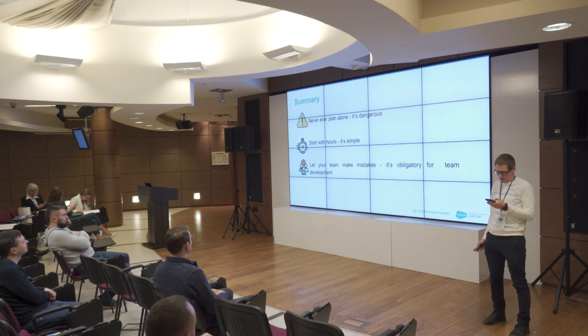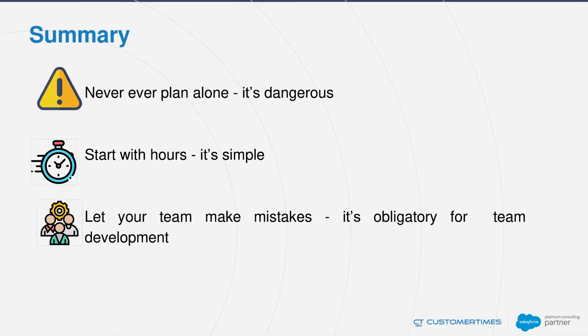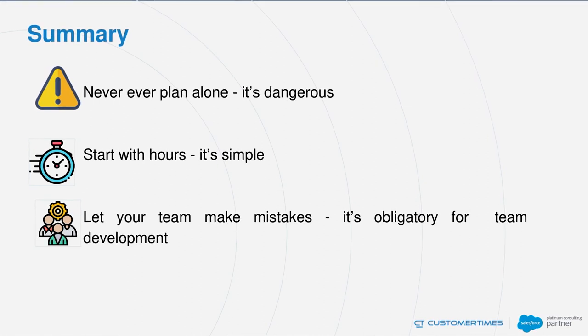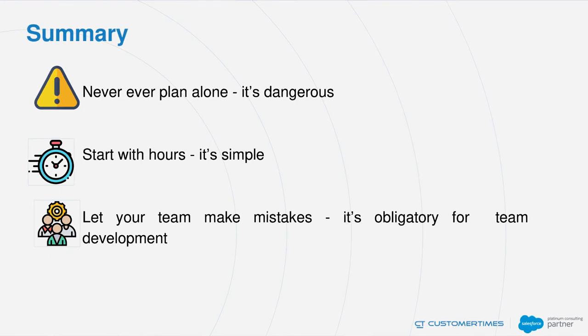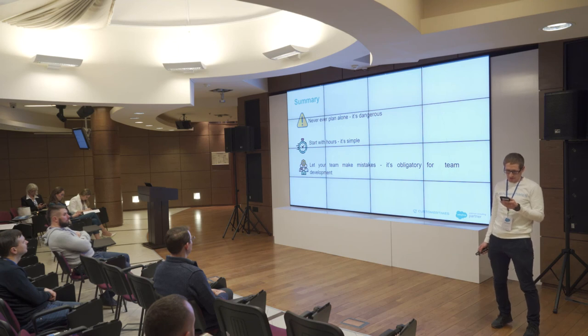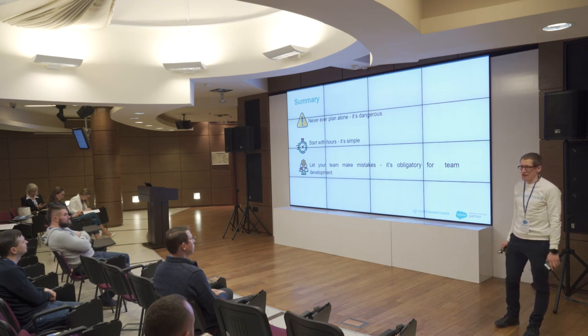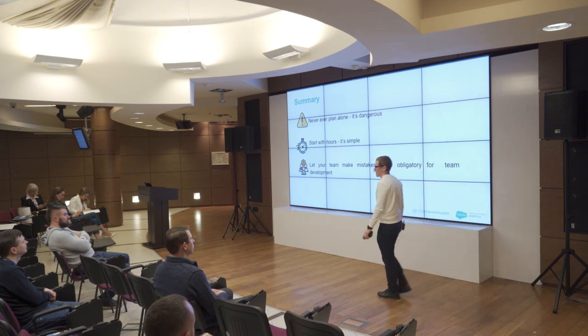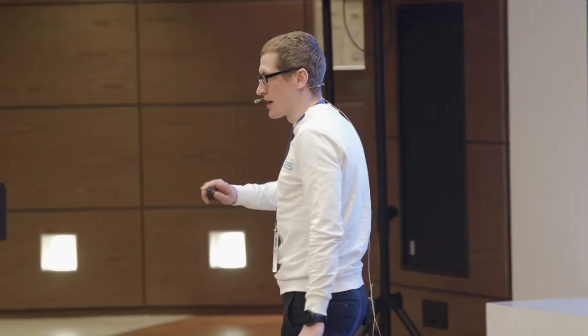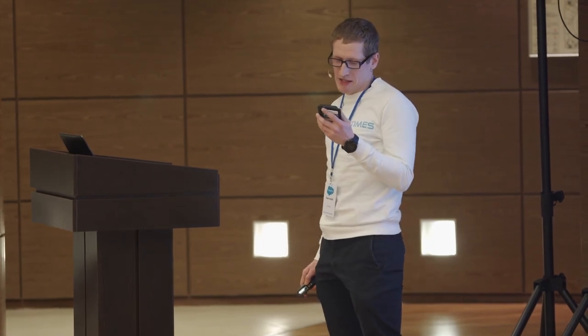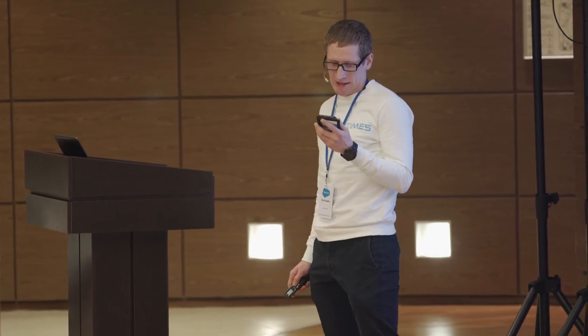To summarize: avoid planning alone — you get a personal plan but the team doesn't believe in it. Improve the whole team's estimation skills. Start estimation with hours — don't think about story points at first. In my experience, after several sprints the team will understand these hours not as astronomical hours but as something relative, and they will naturally map to story points. And don't forget: estimation is a part of the learning process — you can get better from one sprint to another, and eventually your dream is to conquer space with your team.